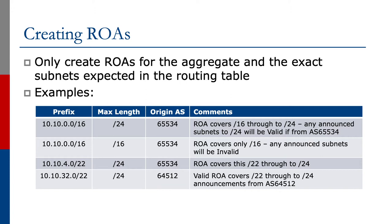The next line is for 10.10/16 but here the max length is only /16. The ROA only covers this /16 and no subnets at all — it's only this /16 for origin AS65534. If any subnet is announced, they will be invalid.